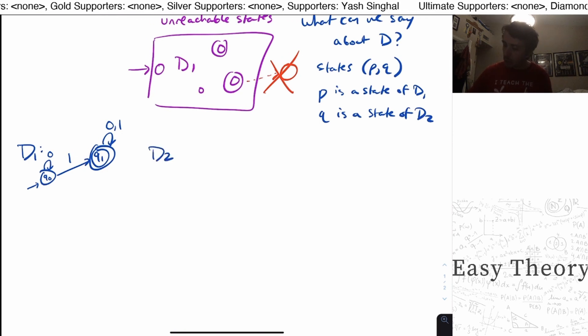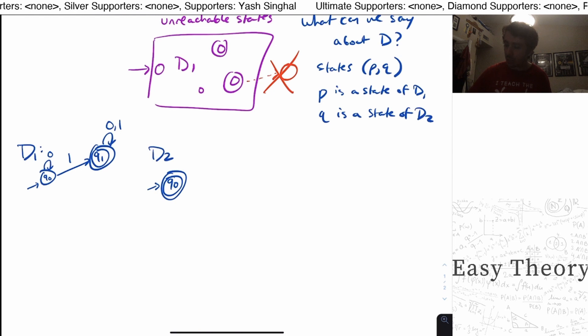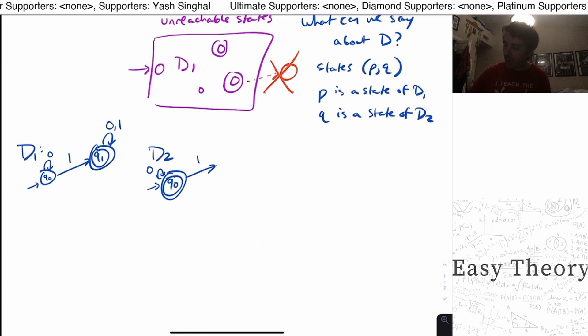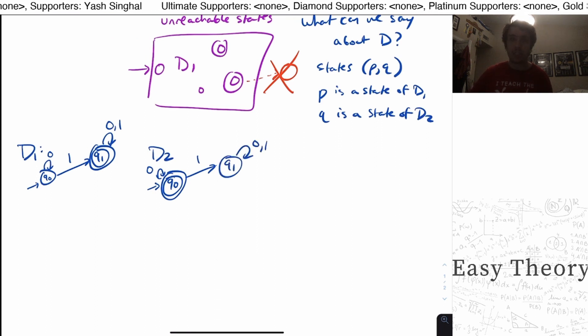And D2, I'm going to keep it the exact same machine, but I'm gonna flip the final and non-final states. And we'll see why I'm doing that in a second. So I'm just gonna flip the final and non-final states, but the structure otherwise is exactly the same.